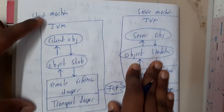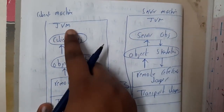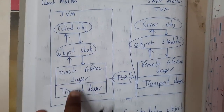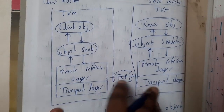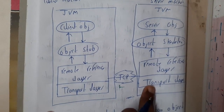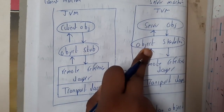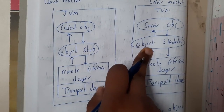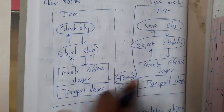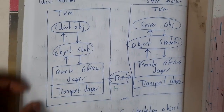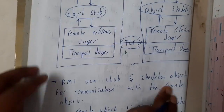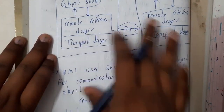Looking at the diagram: here is your client and here is your server. The client will have its own JVM, client object, object stub, and remote reference layer. There will be a connection — assume they are using a TCP connection — then the transport layer, remote interface, remote reference layer, object skeleton, and server. The process continues similarly to RPC, but instead of direct stubs we have this stub and skeleton.